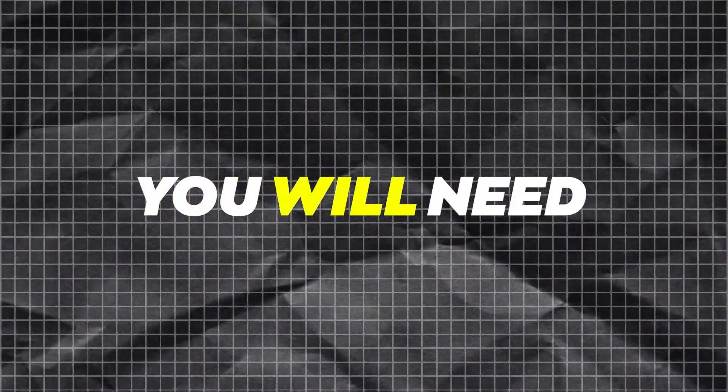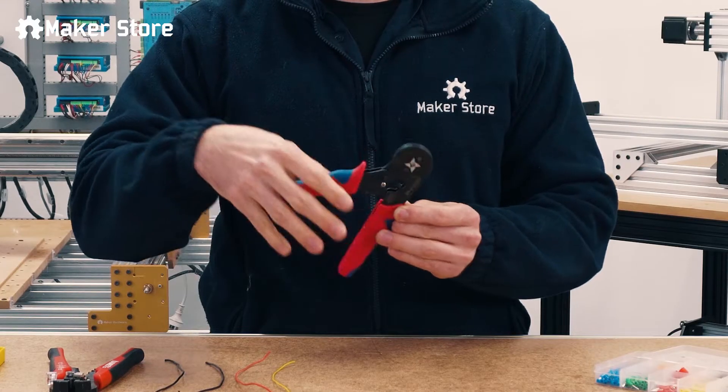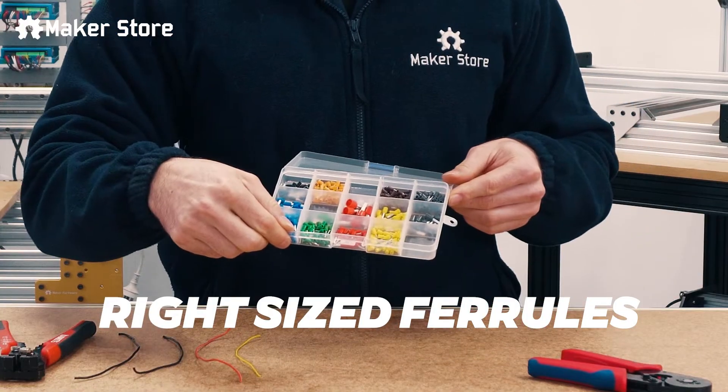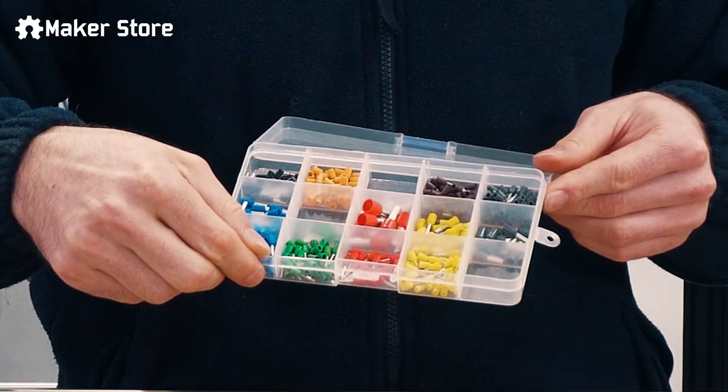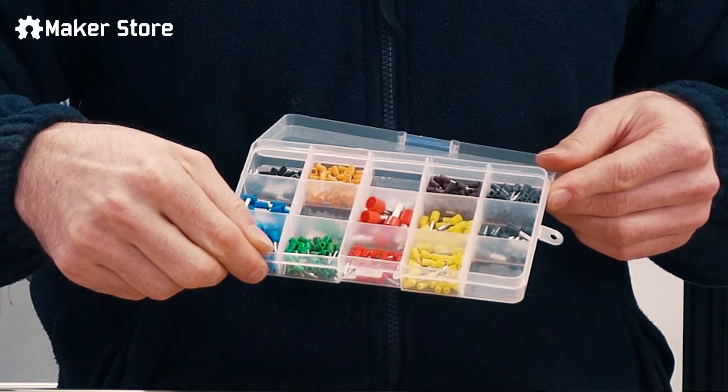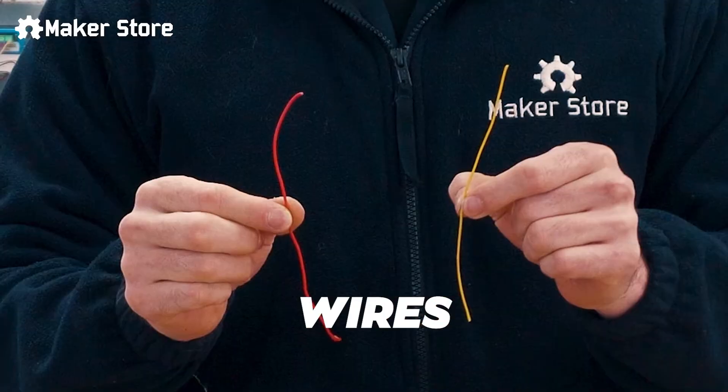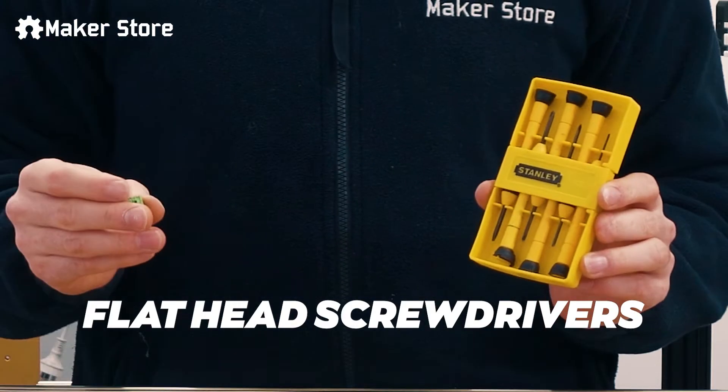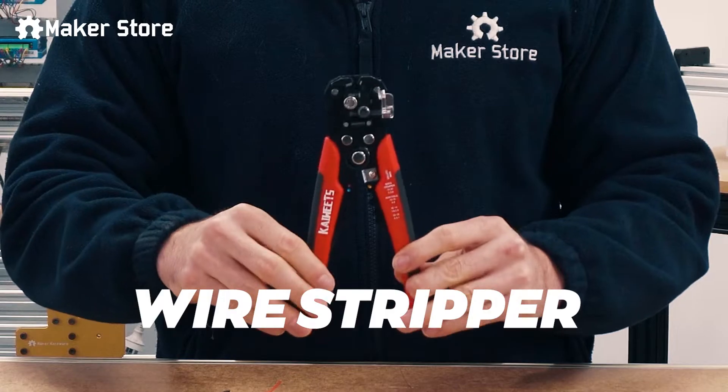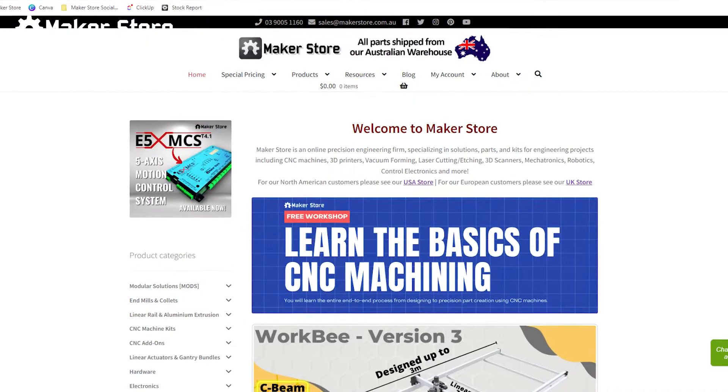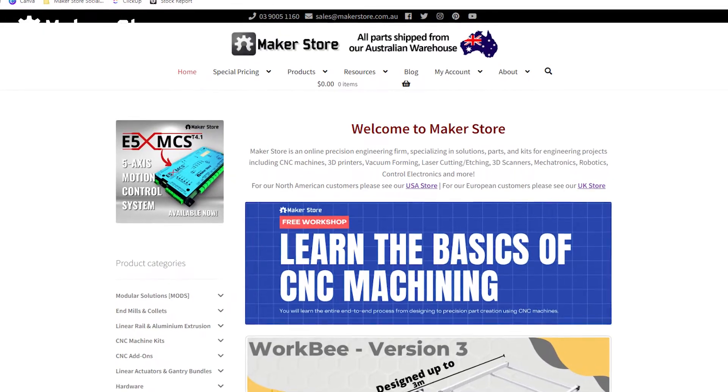To crimp a wire, you will need a crimping tool, appropriately sized ferrules—these come in many sizes, so make sure the ferrule fits your wire size—a wire, flathead screwdrivers, EDG connectors, and a wire stripper. You can find these products available on our website, link down below.